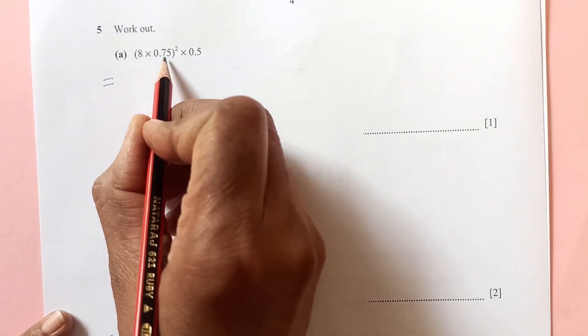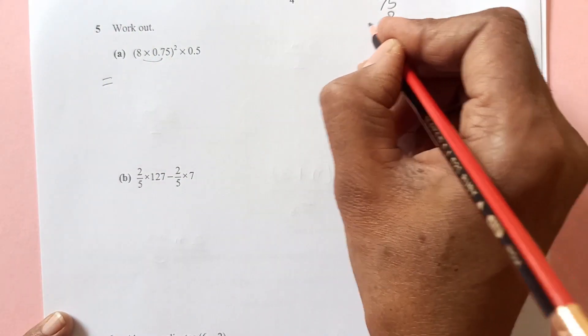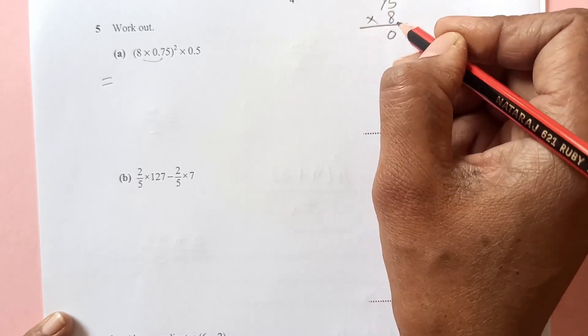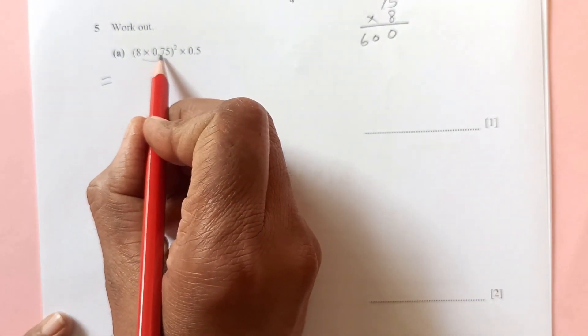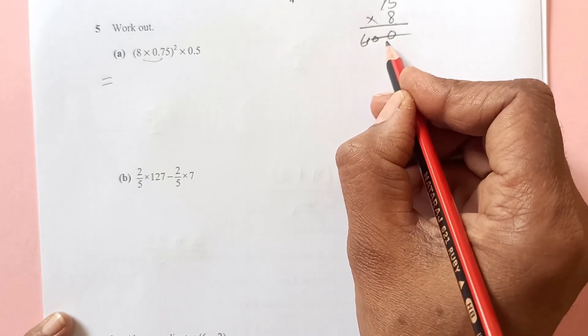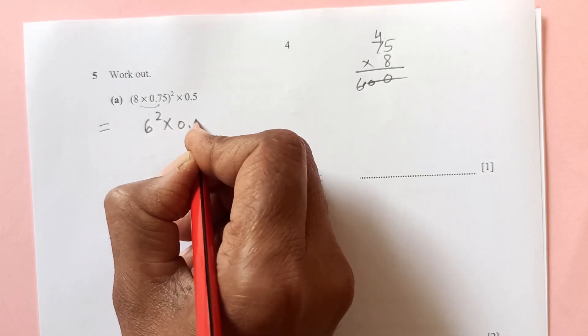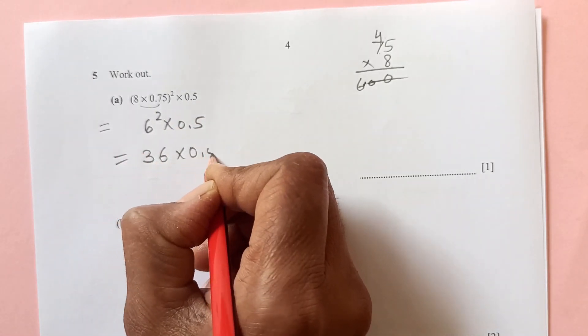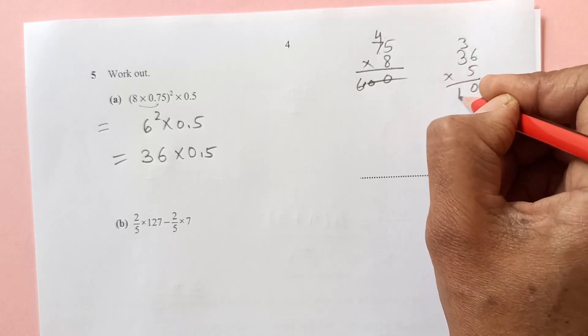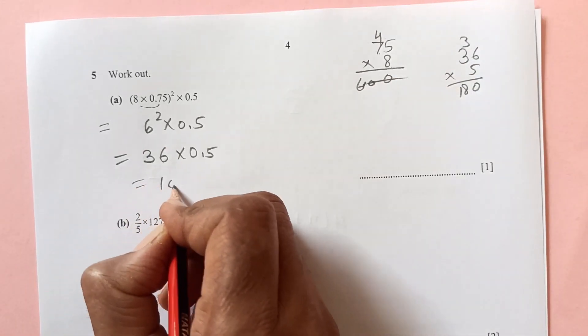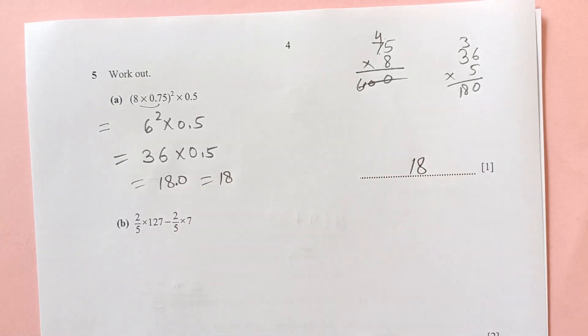Let's start the next question. We have 8 times 0.75. First let's solve this bracket. Times 8, 8 times 5 is 40, 8 times 7 is 56 plus 4 is 60. This is going to be 600, but there is 2 decimal place, so it will remain only 6 over here. This will become 6 squared times 0.5. 6 squared is 36 times 0.5. 36 times 5, 6 times 5 is 30, 80. This is 180, but we have here 1 decimal place, so 1 decimal will come over here. This is equal to 18.